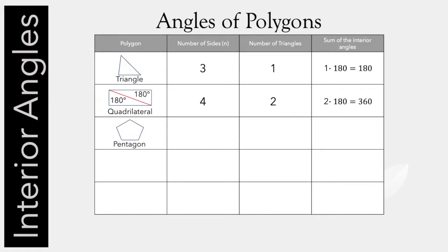Let's try a pentagon. A pentagon has five sides. And if we draw some diagonals, we can split that pentagon into three triangles. Just like the quadrilateral, we have 180 degrees in each of those triangles. If there's three of them, that's three times 180 degrees — so there's 540 degrees total in the pentagon.